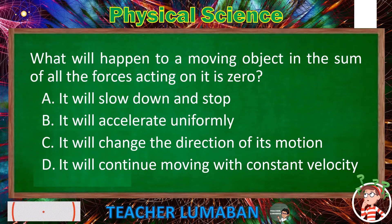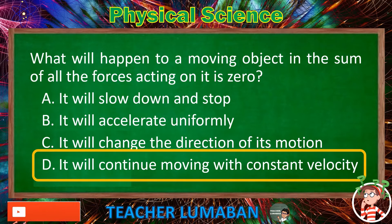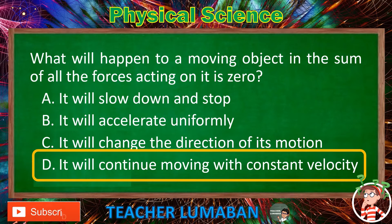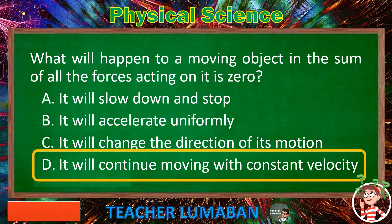The correct answer is letter D — It will continue moving with constant velocity. The object will continue moving with constant velocity when the sum of all the forces acting on it is zero.